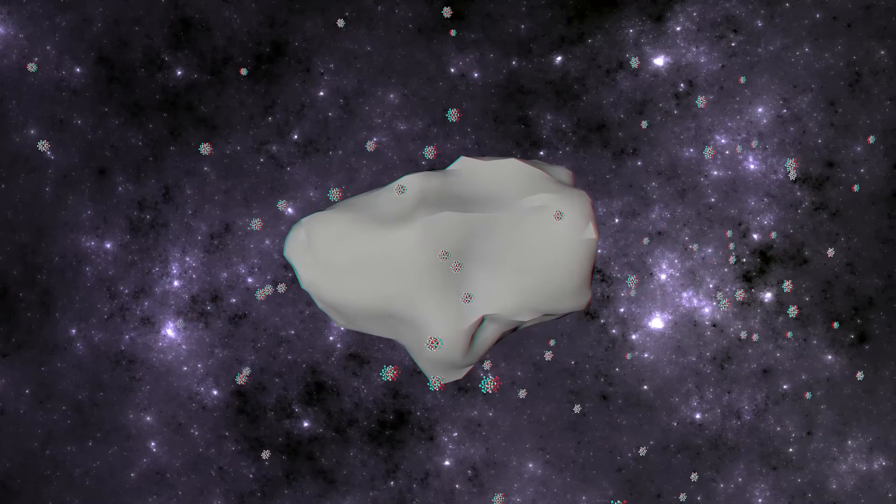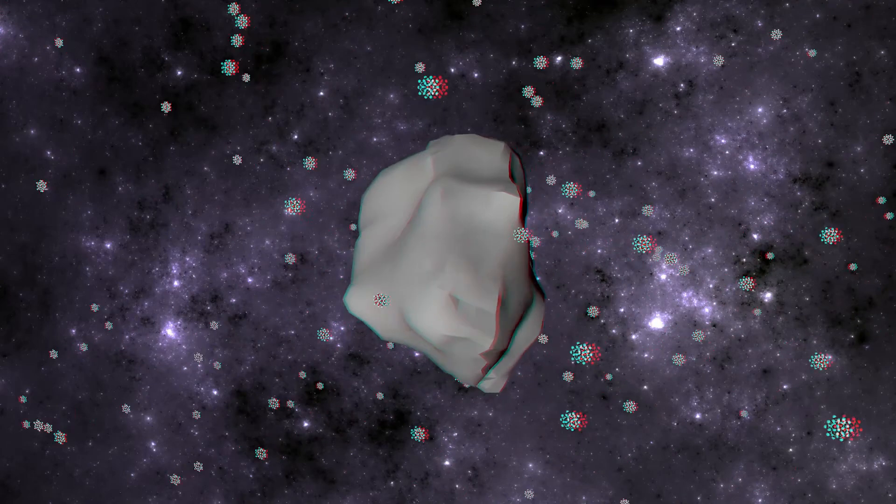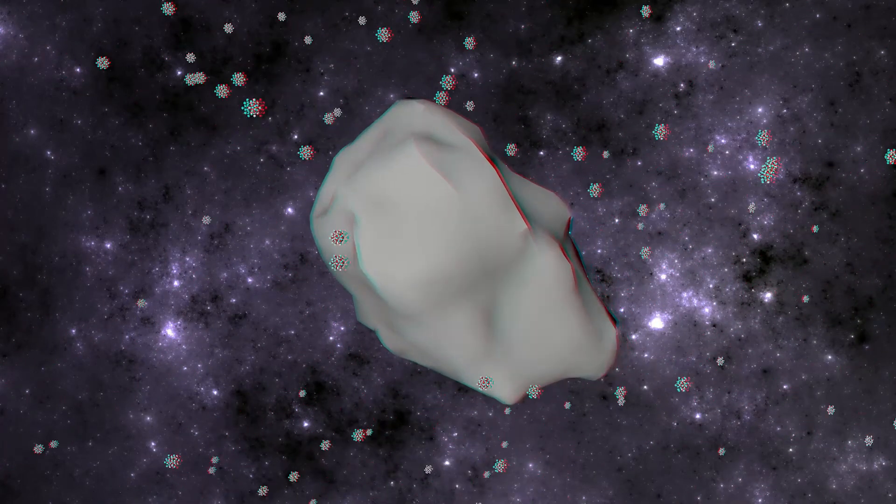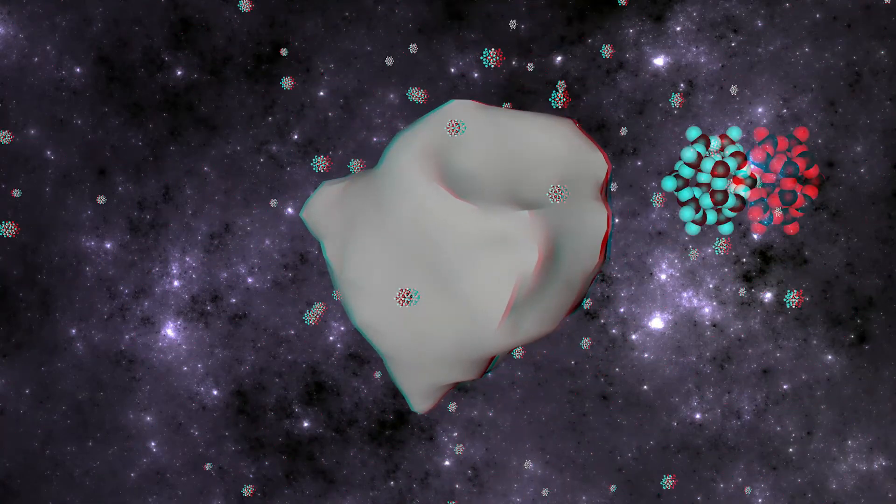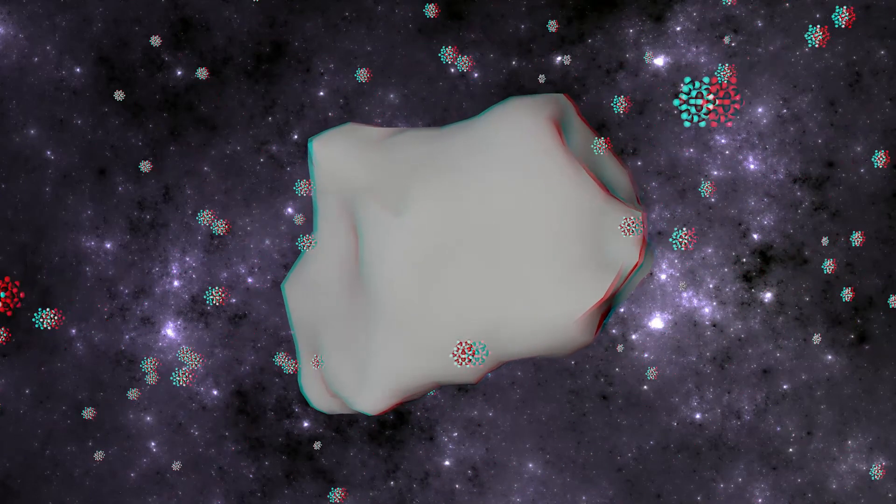They interact both gravitationally and directly with ordinary matter, and become quantum entangled over long distances in space, causing them to be transparent to visible, infrared, and radio frequencies. Therefore, they are baryonic dark matter.